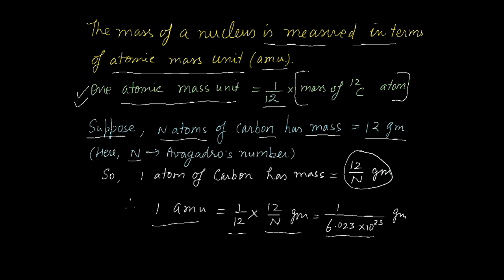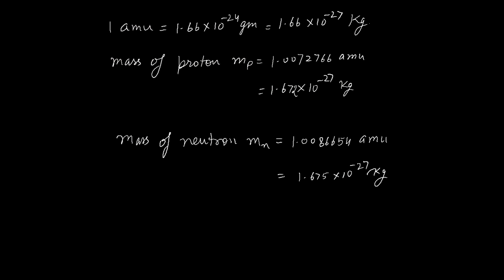The 12s cancel out and you have only 1/N gram. Put the value of N and you will get 1.66×10⁻²⁴ grams. Simplify it and convert into kilograms: 1 amu = 1.66×10⁻²⁷ kg.